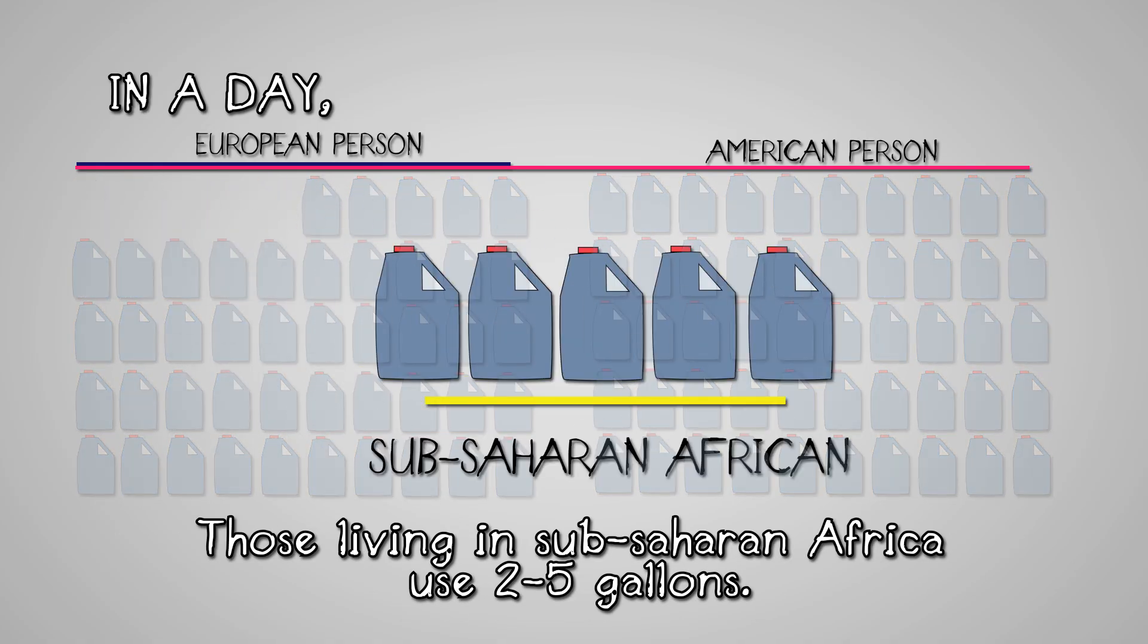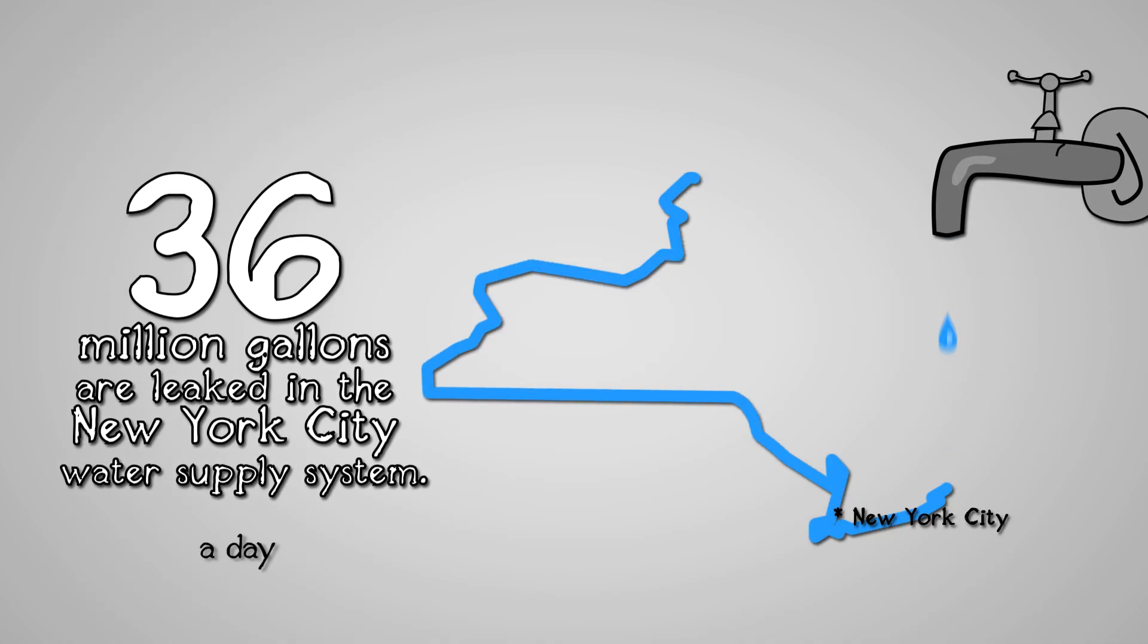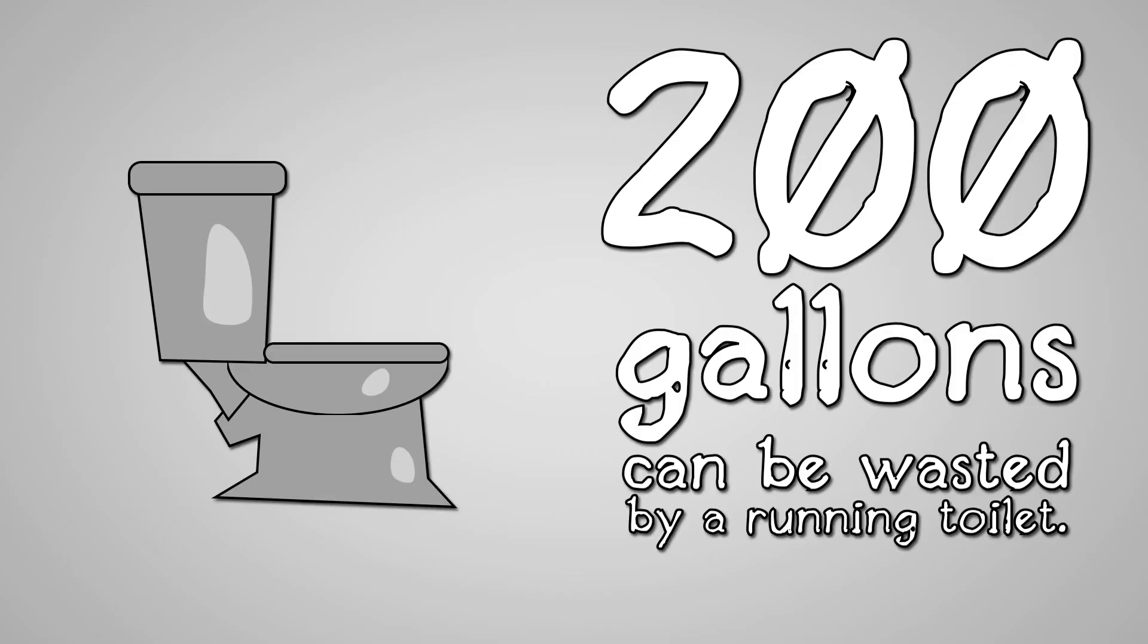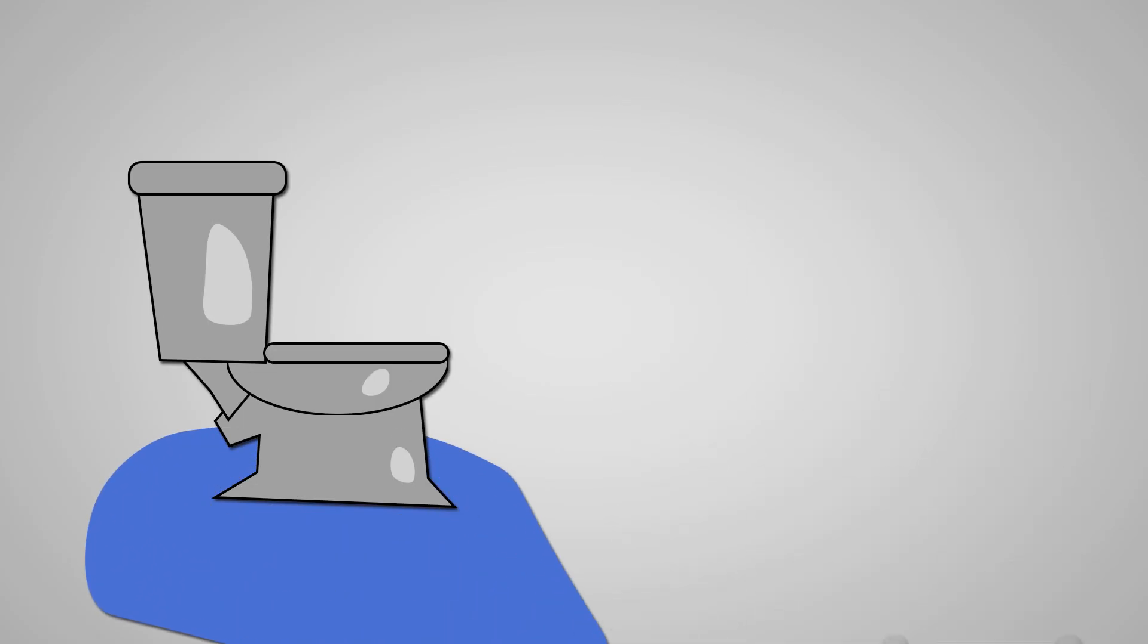Those living in sub-Saharan Africa use 2 to 5 gallons. 36 million gallons are leaked in the New York City water supply system. 200 gallons can be wasted by a running toilet.